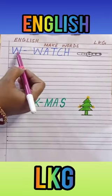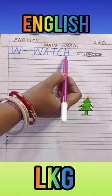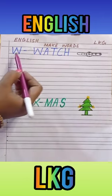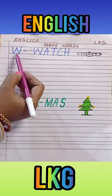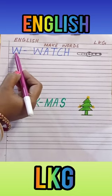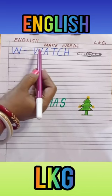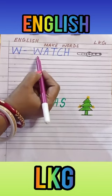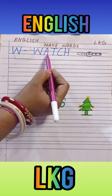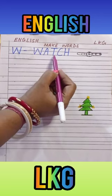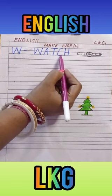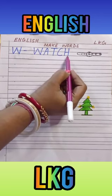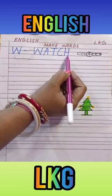What is the spelling of watch? All of you repeat with me. W for watch. W, A, T, C, H. Watch.